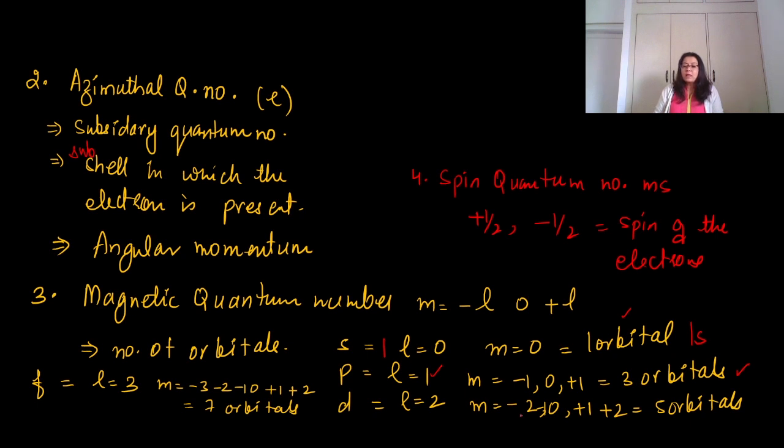For f, l equals 3, so m equals minus 3, minus 2, minus 1, 0, plus 1, plus 2, plus 3. Let's count: 1, 2, 3, 4, 5, 6, and 7 orbitals are going to be present. So these are your quantum numbers.